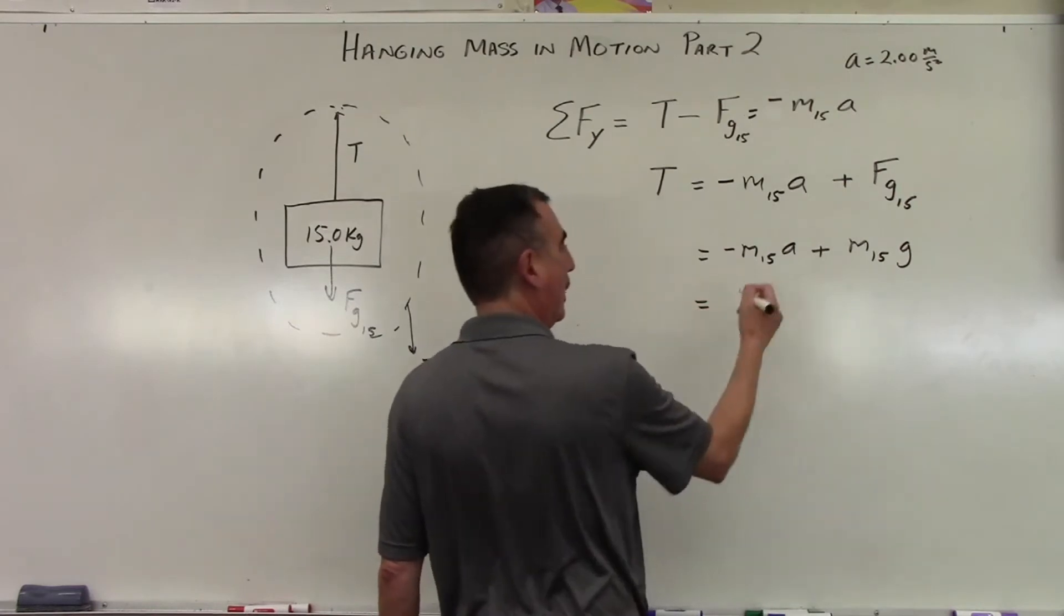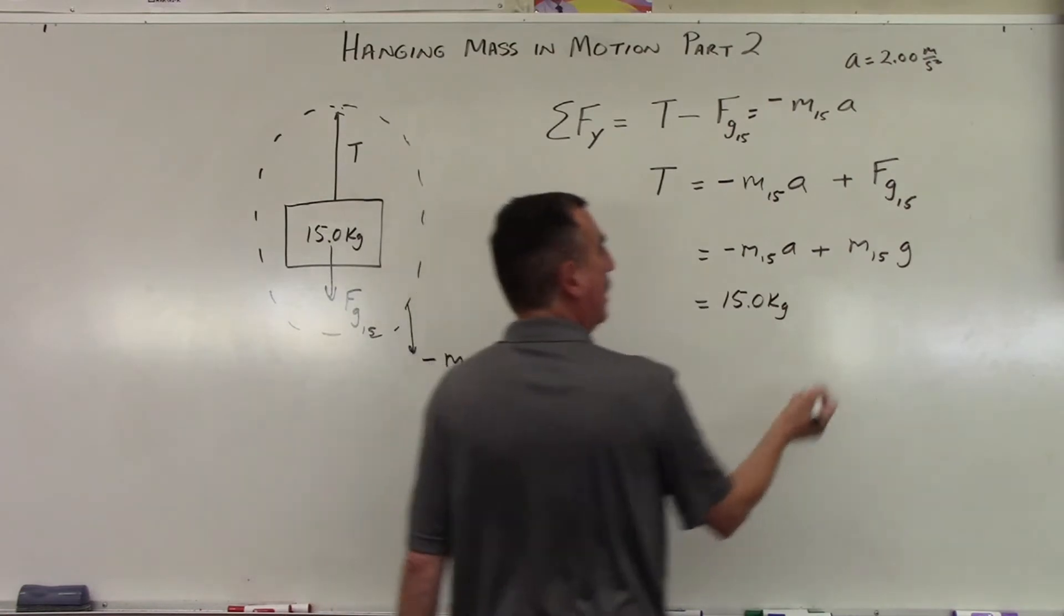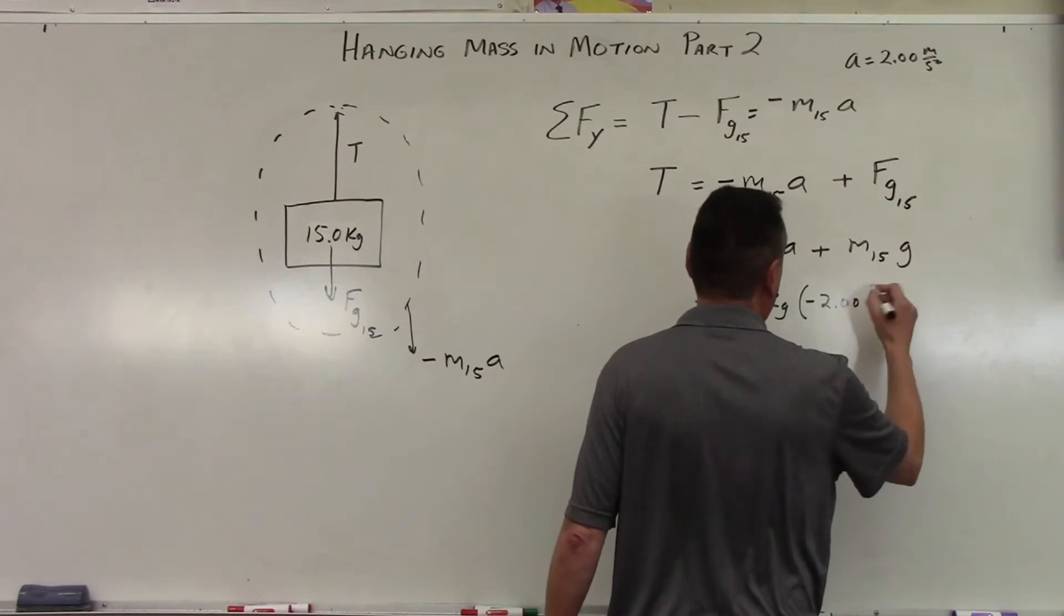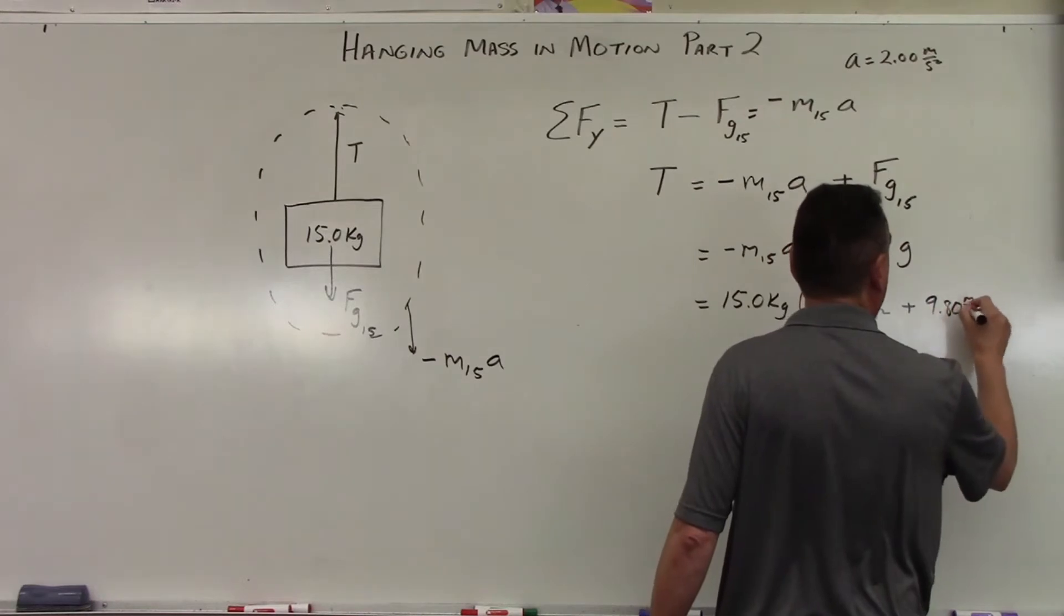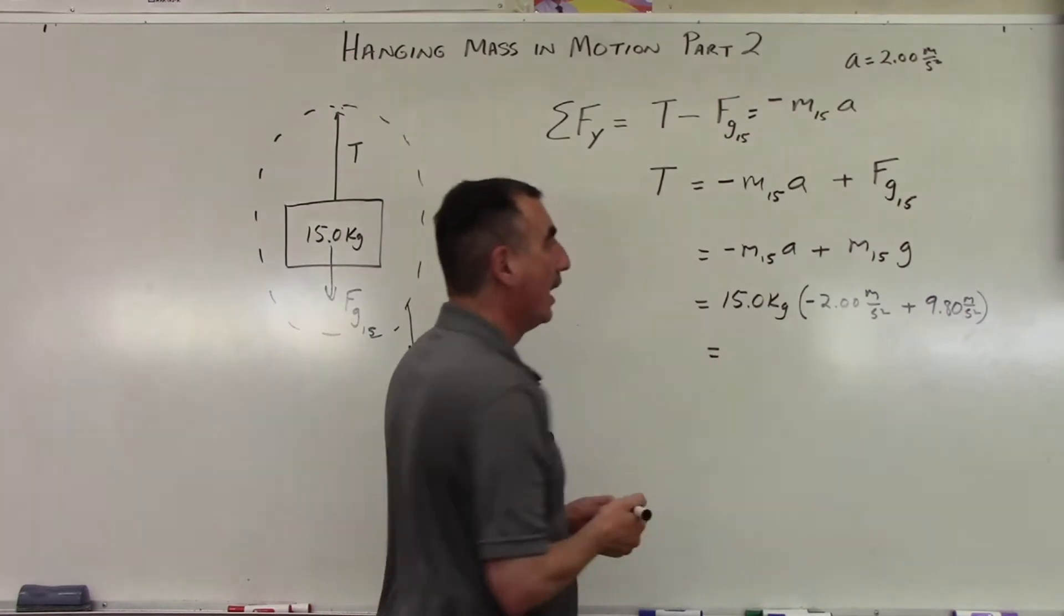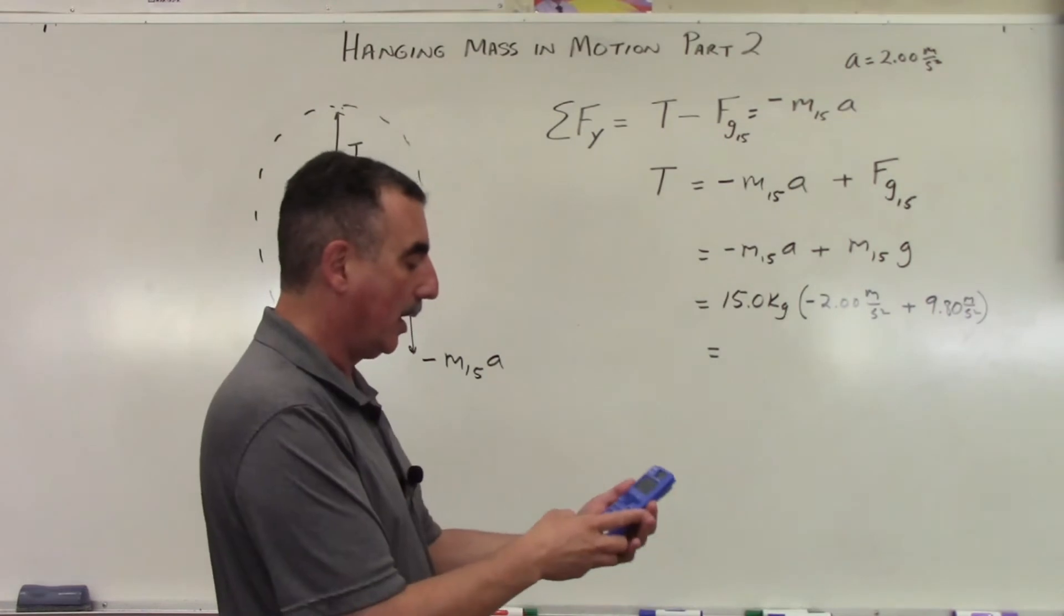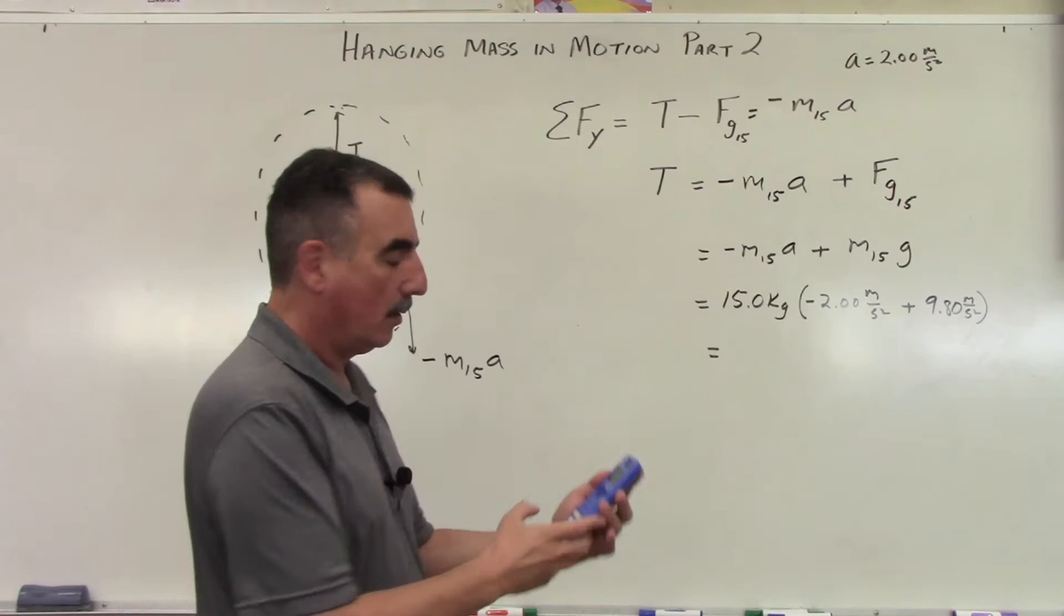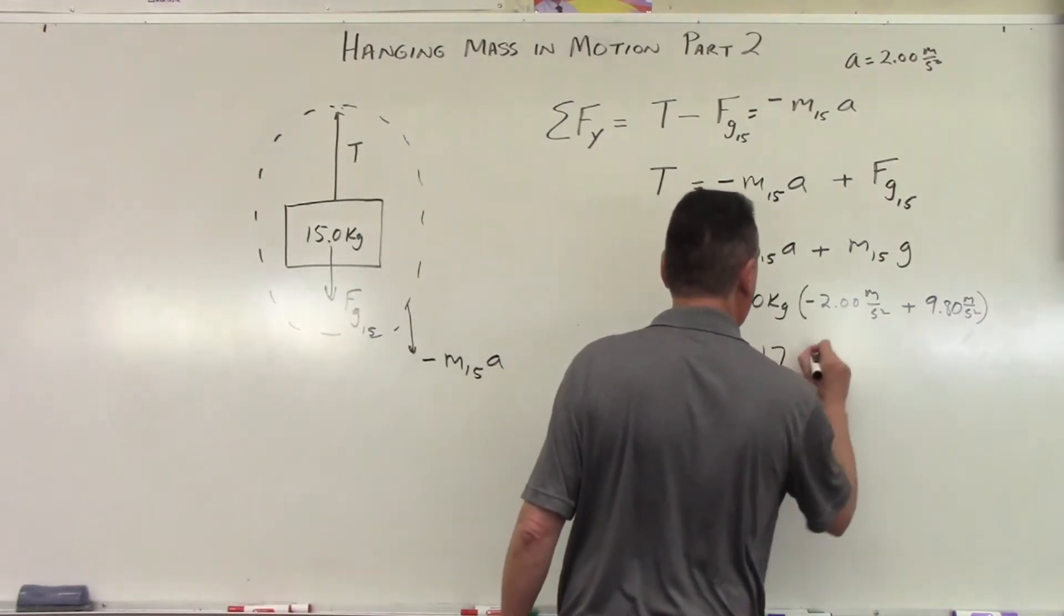We're going to have m sub 15 A plus the mass of the object times G. This time I'm going to pull out the 15 again like I did before. Negative 2.00 meters per second squared plus the 9.80 meters per second squared. And so in this case we're going to have 7.80 times the 15. So this time we get 117 newtons.